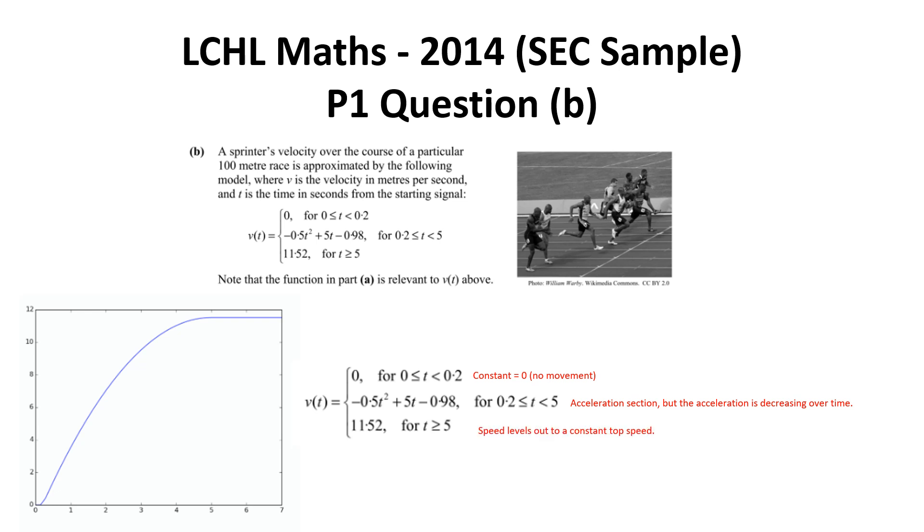The speed is leveling out to a constant top speed. This is a great example of where if you were doing just a negative quadratic, the speed would drop back down to zero, which is not how you would end a race. However, it's nice to see how you can maybe use sections of a function to describe movement - in this case, the speed of a runner.